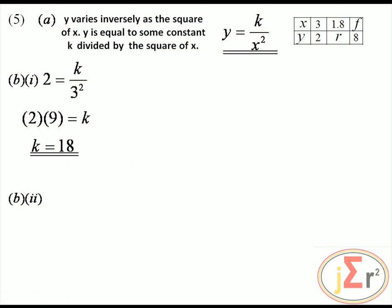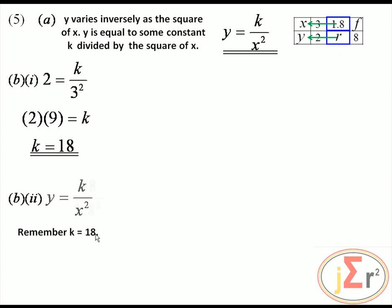Using y equals 18 over x squared, find r when x equals 1.8 and y equals r. So r equals 18 divided by 1.8 squared. 1.8 squared is 3.24, and 18 divided by 3.24 gives approximately 5.56.